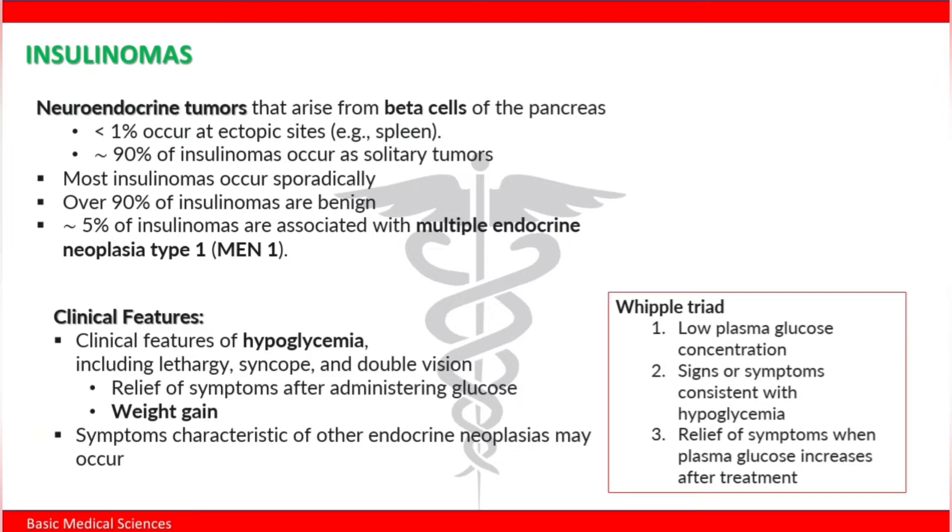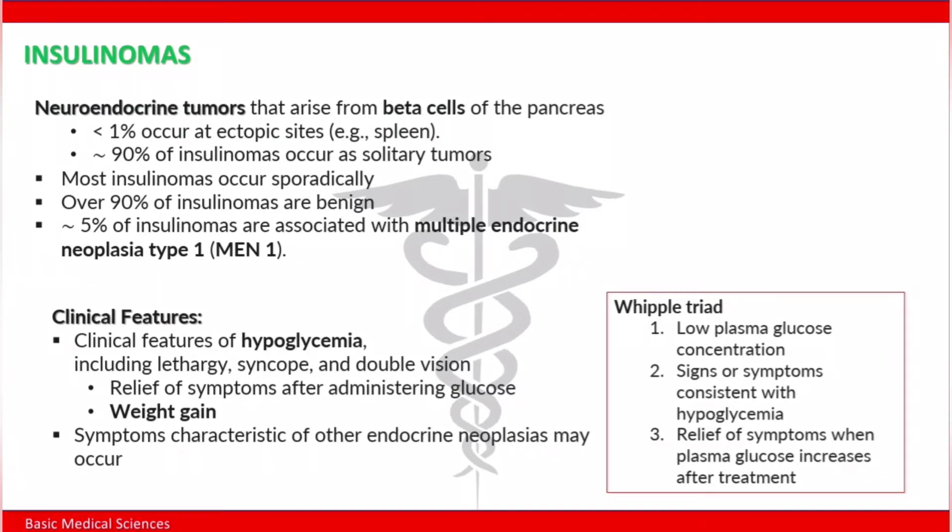The main clinical feature is hypoglycemia. The function of insulin is uptake of glucose from the blood into the cells, and also uptake of amino acids — but here we are focusing on glucose. So if we have high levels of insulin because of insulinomas, we will have hypoglycemia, and also lethargy, syncope, and diplopia or double vision. The symptoms can be relieved by administration of glucose, and the patient will also have weight gain.